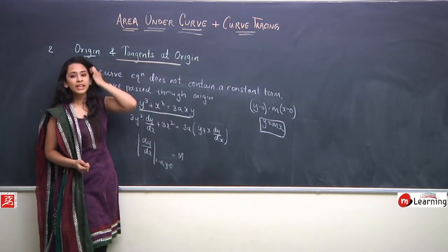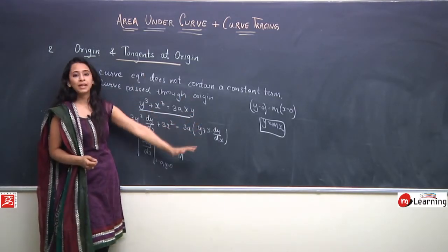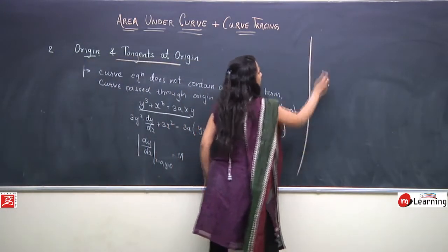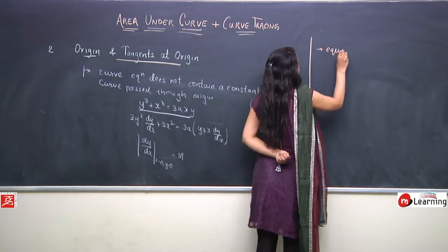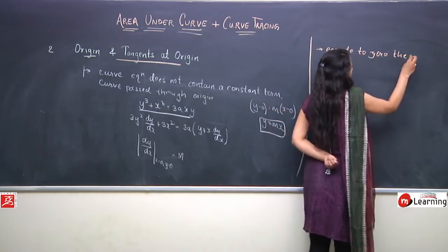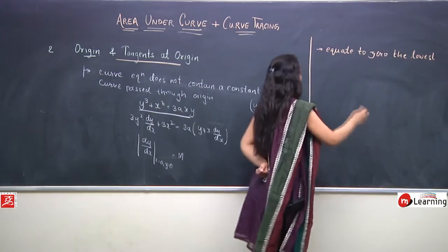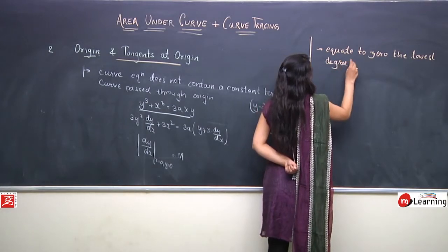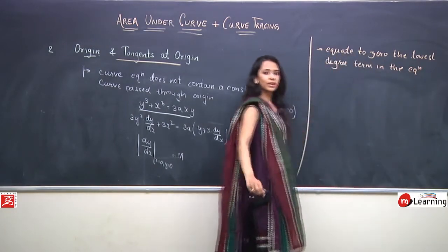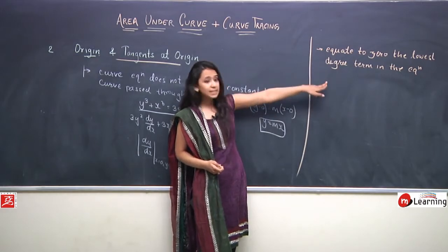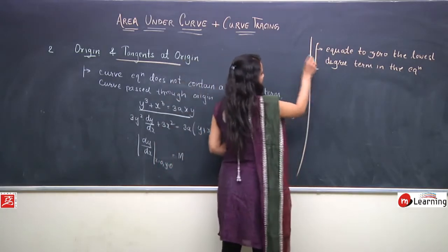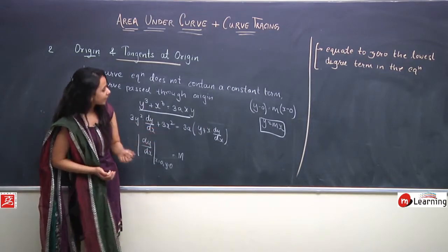There is a shortcut to find the equation of the tangent at origin for a curve passing through origin, instead of computing dy/dx. The shortcut is: equate the lowest degree term in the equation to 0 and factorize. Whatever you get are the equations of the tangents at origin.